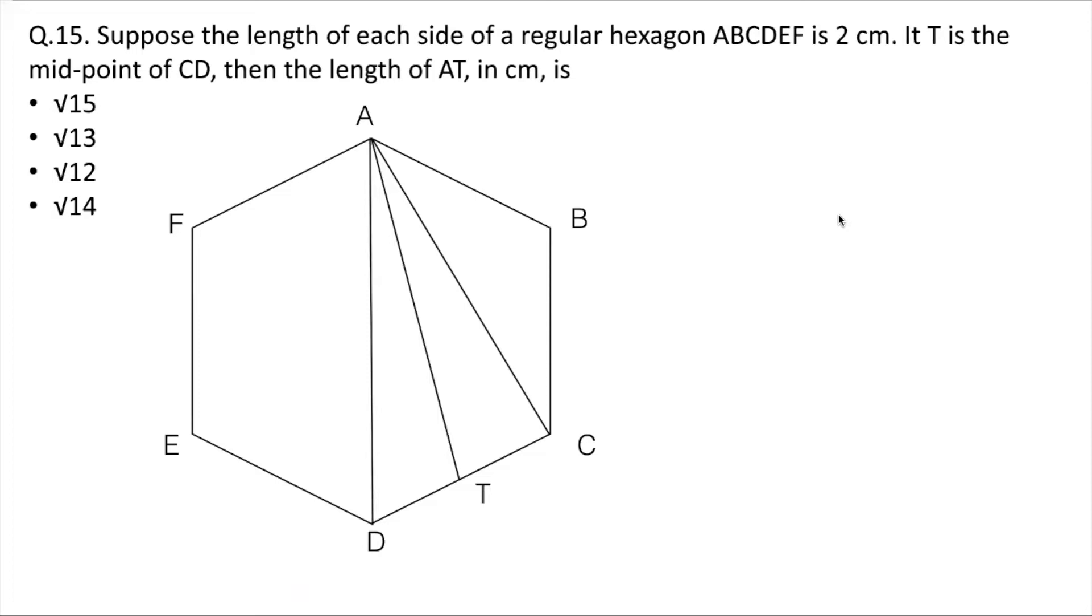Alright guys, suppose the length of each side of a regular hexagon ABCDEF is 2 centimeters. If T is the midpoint of CD, then the length of AT in centimeters is. So let's solve this question guys.